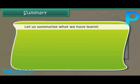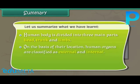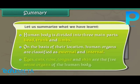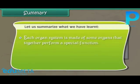Let us summarize what we have learned. The human body is divided into three main parts: head, trunk, and limbs. On the basis of their location, human organs are classified as external and internal. Eyes, ears, nose, tongue, and skin are the five sense organs of the human body. Each organ system is made of some organs that together perform a special function.